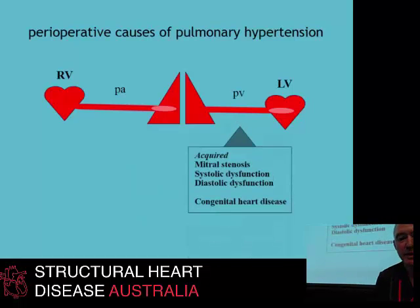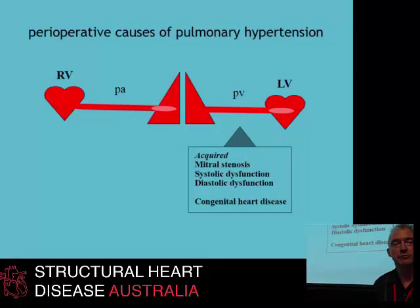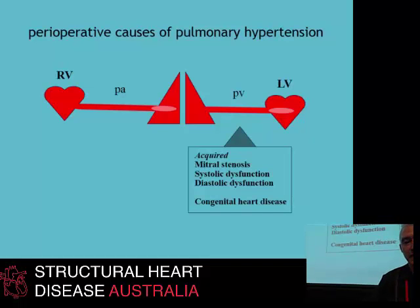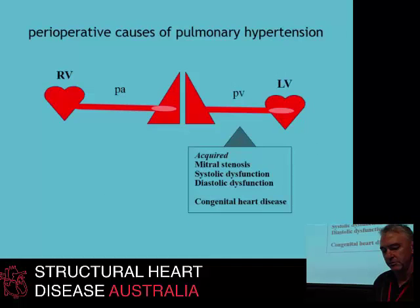As also mentioned, there are causes distal to the lungs that can cause pulmonary hypertension. Anything that elevates pulmonary venous pressures — whether acquired conditions such as mitral stenosis, systolic dysfunction, diastolic dysfunction of the LV, or patients with congenital heart disease — will cause elevation of pulmonary arterial pressures.